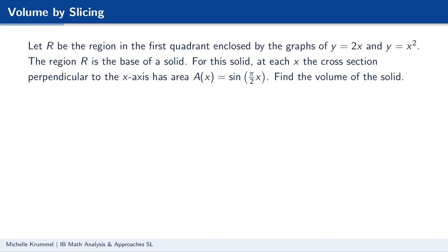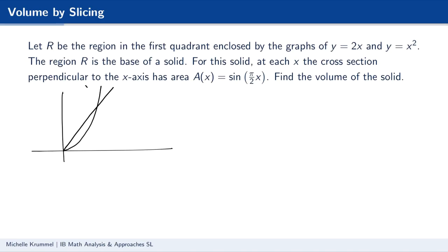Suppose we have a region R in the first quadrant, enclosed by y equals 2x and y equals x squared. This region R is the base of a solid. I'll roughly sketch the graph — the right side of the parabola y equals x squared and the line y equals 2x in quadrant one. The enclosed region is shaded as the base of our solid.